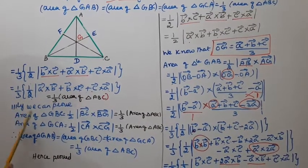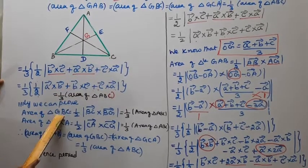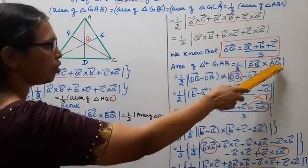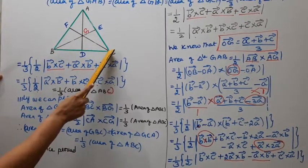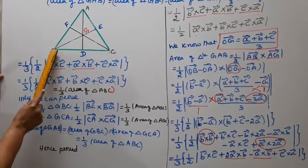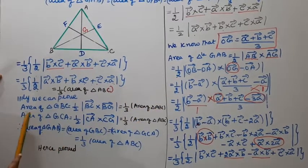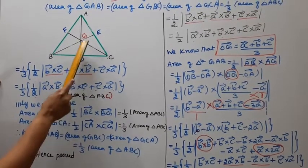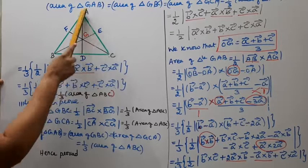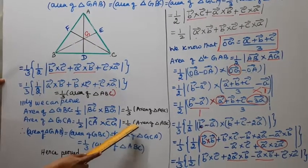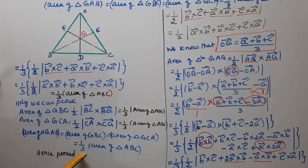Similarly, we can prove: Area of triangle GBC equals one-third area of triangle ABC, using co-initial vectors BC vector cross BG vector. And area of triangle GCA equals one-third area of triangle ABC. Therefore, area of triangle GAB = area of triangle GBC = area of triangle GCA = one-third area of triangle ABC. Hence proved.